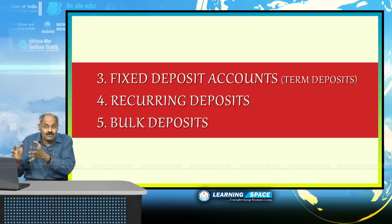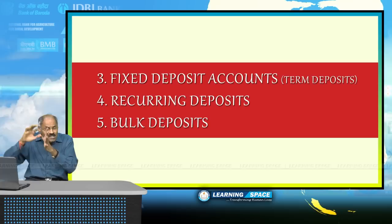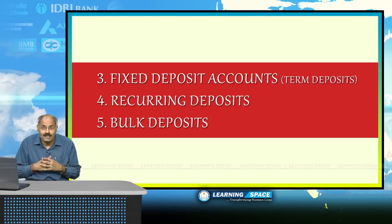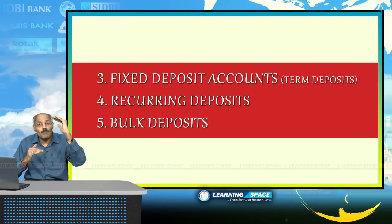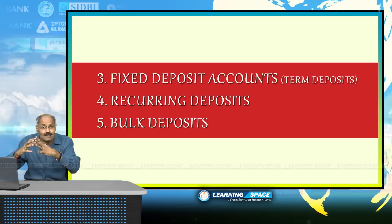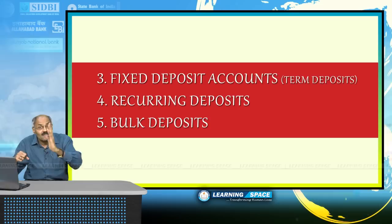In this class, we are going to discuss three types of deposits: fixed deposits, recurring deposits, and bulk deposits. The key feature of these three types is that they are not payable on demand — they are for a specified agreed period between you and the bank. If you deposit money for six months, your deposit will mature after six months and you can take your money only after that.